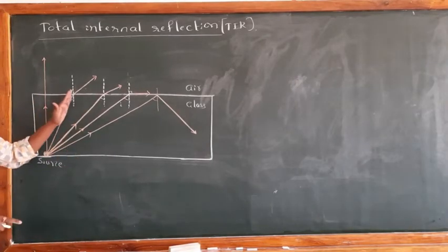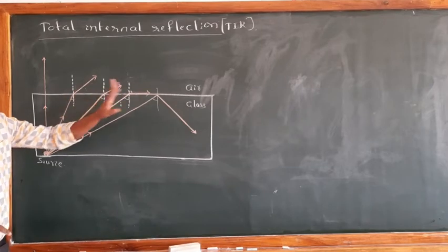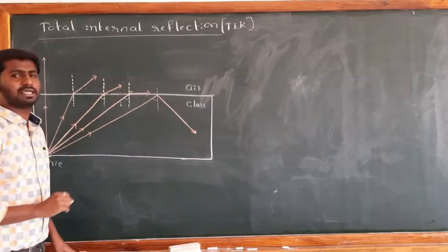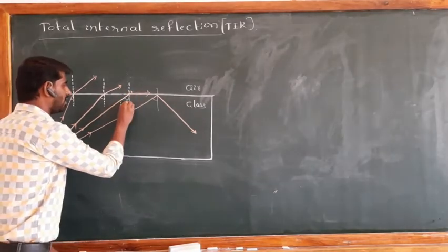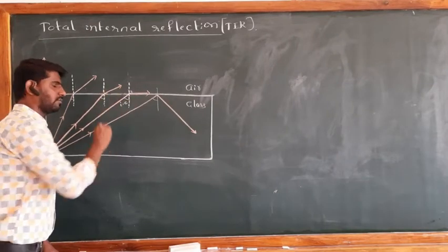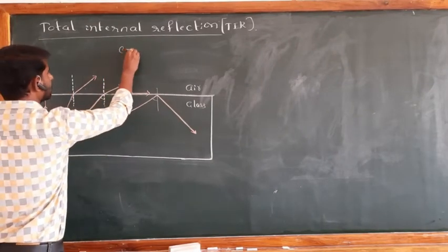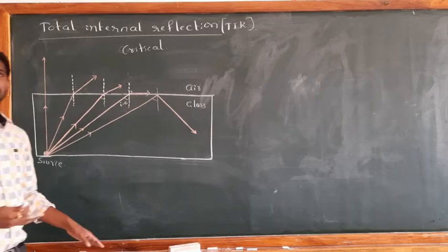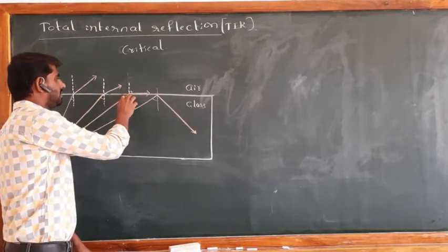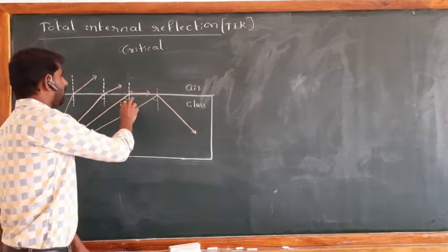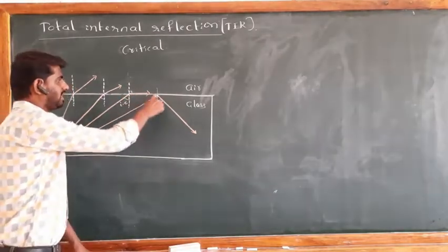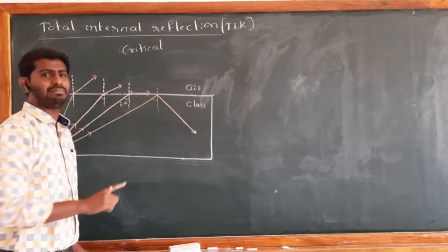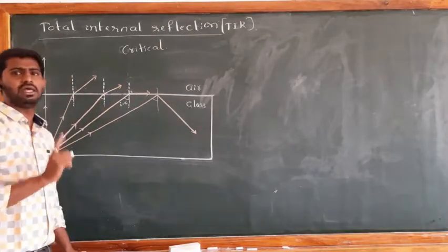As the angle of incidence increases, the angle of refraction also increases. At a particular angle of incidence, the refraction angle becomes 90 degrees — we call this the critical angle. If we increase the angle of incidence beyond the critical angle, there will be no refraction; the entire incident light reflects back to the same medium. This is Total Internal Reflection.